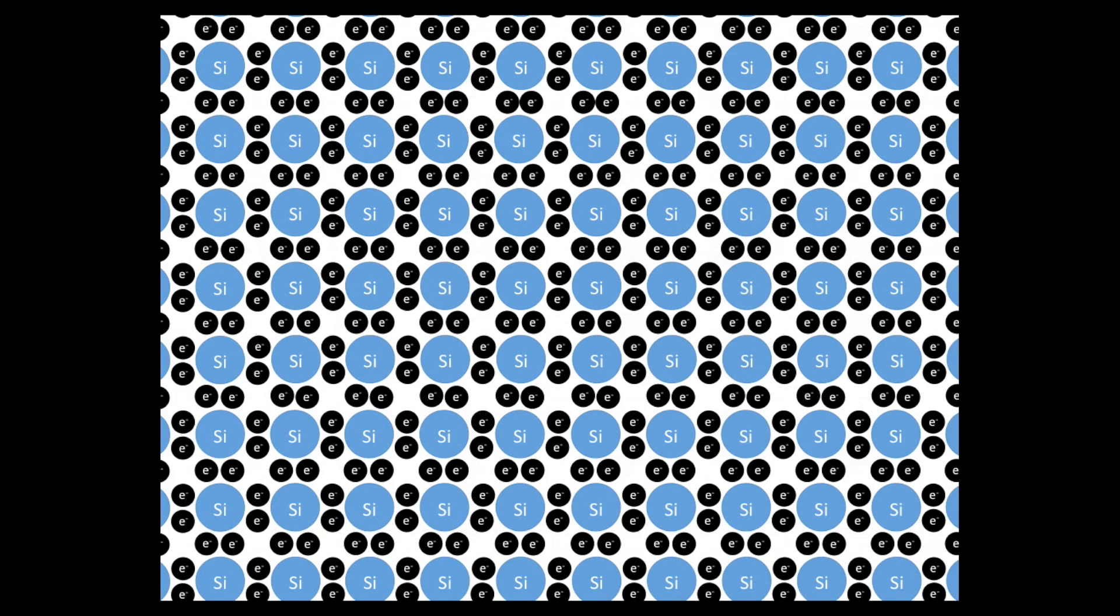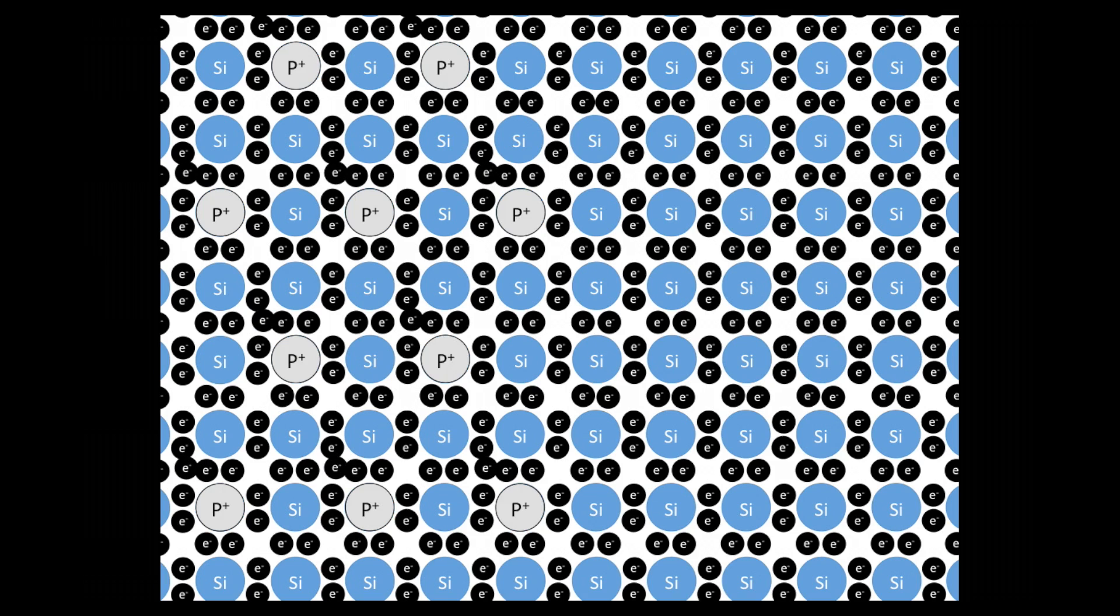We're able to create an electric field inside our solar cell by using different dopants on either side of the device. Here we have our silicon lattice, which is undoped. We'll start by replacing some of the silicon atoms with phosphorus atoms on one side. On the opposite side, we'll put in boron atoms.